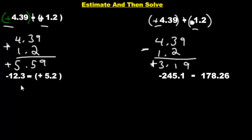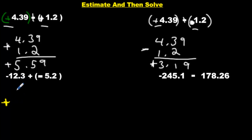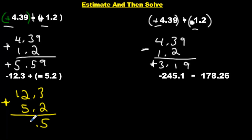We have another subtraction question followed by a positive number, so we flip the signs — it's a great strategy. Now we have negative 12.3 with a negative, and another negative: they're the same. So we add them. Order doesn't matter when you add, so we just put them on top of each other, ignoring the signs. We have 5, 7, 1. Both are negatives and 12 wins — it's bigger and it's negative — so our answer is negative.